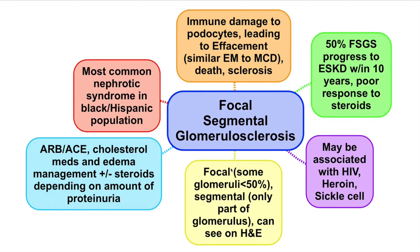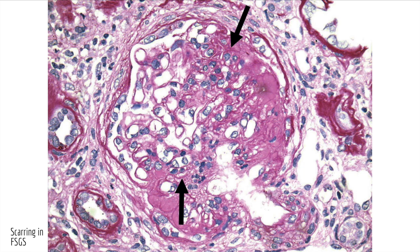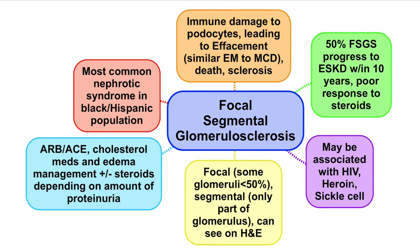Next is focal segmental glomerulosclerosis — the most common nephrotic syndrome in the Black and Hispanic population. The name tells you what it is: focal means only some glomeruli are affected, and segmental means only part of each glomerulus. On the slide you can see patchy pink-stained portions — focal and segmental. It may be associated with HIV, heroin, and sickle cell. 50% of the time patients can progress to end-stage kidney disease within 10 years, and people don't really respond to steroids. Treatments include ARBs or ACEs for kidney protection and cholesterol medications for hyperlipidemia.